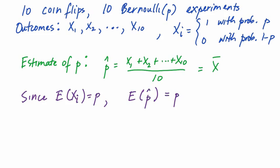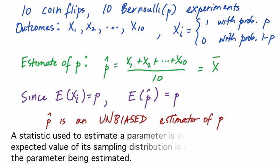So we're using p-hat, the calculated proportion of times something happens in the real world, as our estimate of p, the theoretical probability that it happens. The expected value or long-term average of our estimate is exactly what we're trying to estimate. Hopefully this sounds like a good property of an estimator — indeed, such an estimator which has expected value equal to what it's trying to estimate is called unbiased. So we know that the sampling distribution of p-hat has expected value p. So p-hat seems to estimate what we want it to estimate, but in any one observed set of data, are we likely to be close to p? This depends on the variance of the sampling distribution.